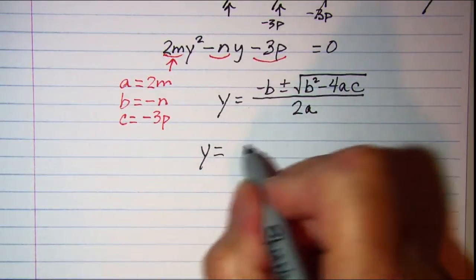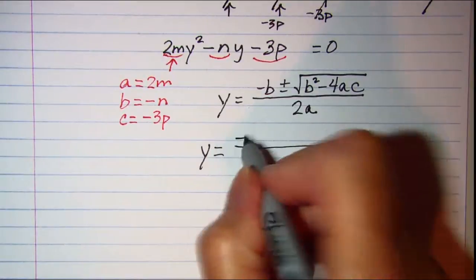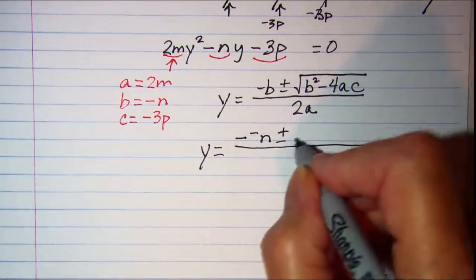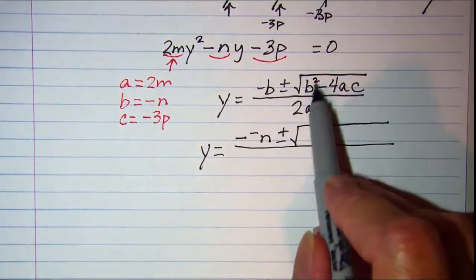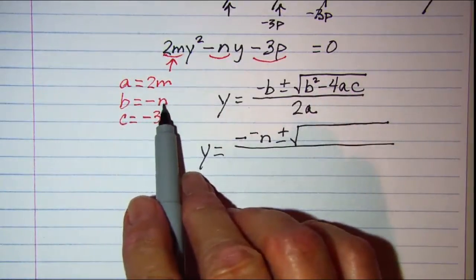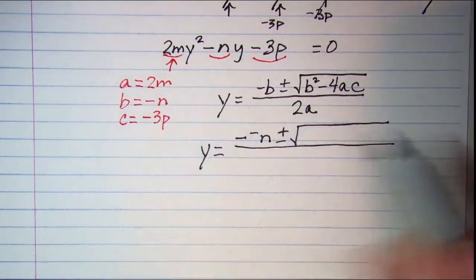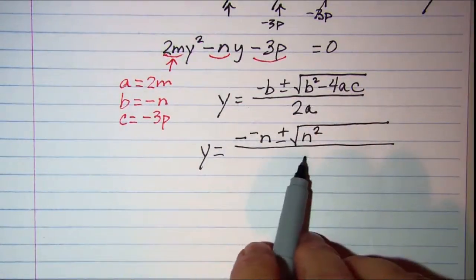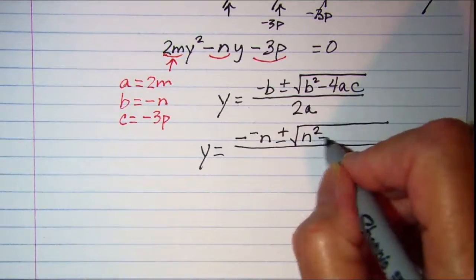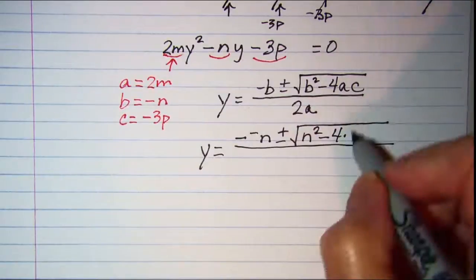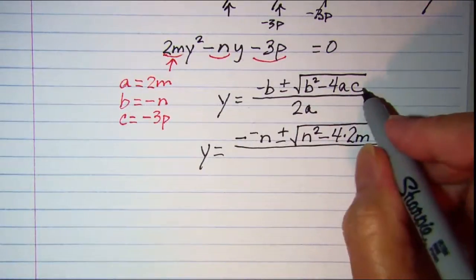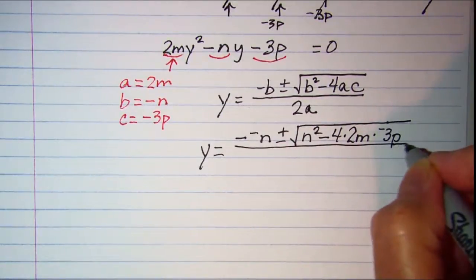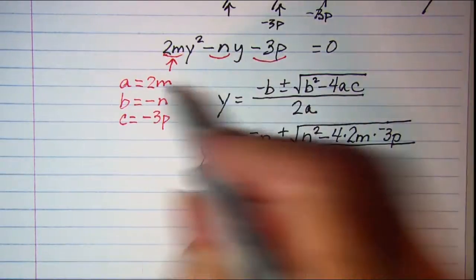We have y is equal to negative and then my b is negative n plus or minus square root of b squared. Now b is negative n so negative n squared is going to be a positive n squared. Because remember whenever you square a negative you'll always get a positive. And then minus 4 times a which is 2m times c which is a negative 3p, all over 2 times a which is 2m.